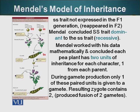Mendel worked with his data mathematically, looked at the statistics, and concluded that a pea plant must have two units of inheritance for each particular character, and that offspring got one trait from each parent.